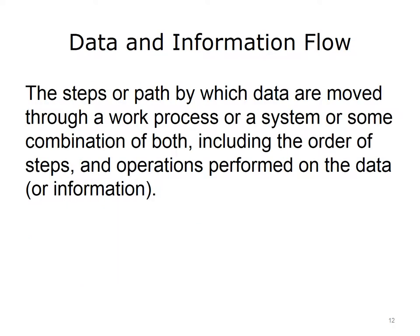One person's data flow may be another person's information flow. Like process and workflow, the words data and information have specific definitions used in certain fields and are often interchanged in other fields and in everyday use. Early work done in the 1960s and 70s uses the term data flow, while more people today tend to use information flow. For this component, and because most of the literature uses the two words interchangeably, we will too. When we use the terms data flow and information flow, we mean the steps or path that the data takes through a work process, or a system, including the order of steps and operations performed on the data or information.